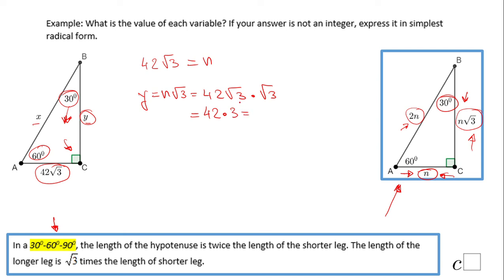That will be 126. So y is 126. And now we can find also x. If you take a look, x is the hypotenuse.